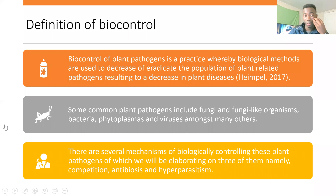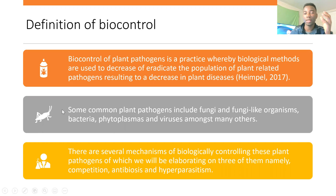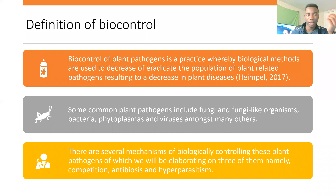So to begin with, what is biocontrol, which is the main word for what we are going to be talking about? Biocontrol of plant pathogens is basically a practice whereby biological methods are used to decrease or eradicate the population of plant-related infections or pathogens, and generally decrease the amount of disease being caused to the plants.